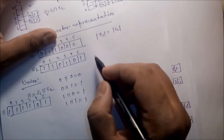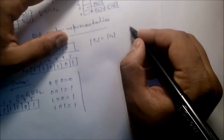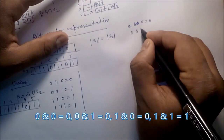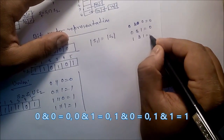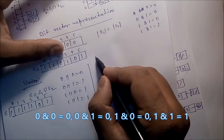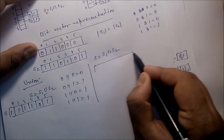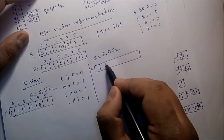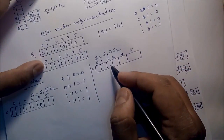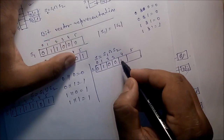Next, the intersection operation. For intersection we apply the AND operation. The AND truth table: 0 AND 0 is 0, 0 AND 1 is 0, 1 AND 0 is 0, 1 AND 1 is 1. To implement S equals S1 intersect S2, apply AND bit by bit: index 0 gives 0, index 1 gives 0, index 2 gives 1, and remaining zeros give zero.